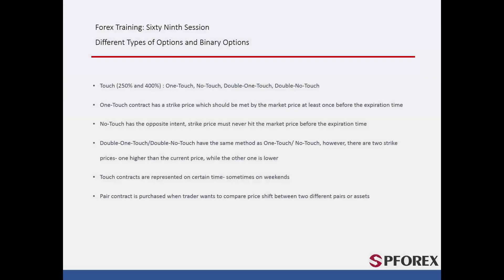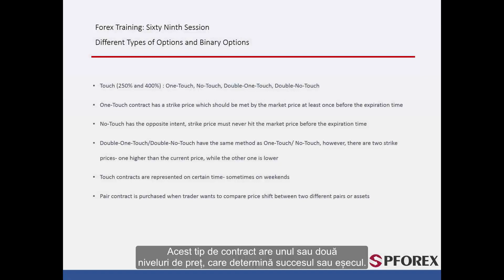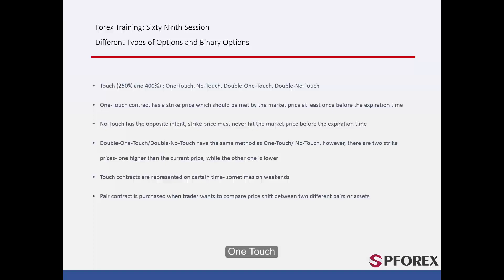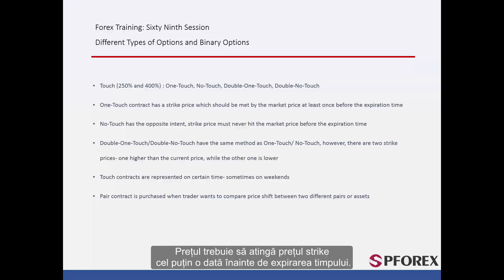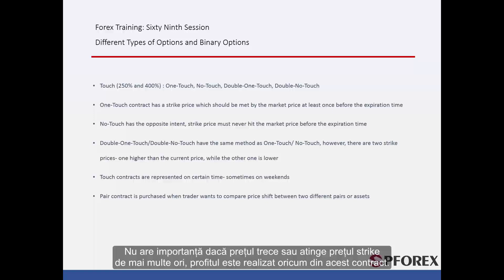Touch: This kind of contract has one or two price levels which determine the success or failure of a deal. One Touch: The price must at least reach the strike price before the expiration time. It does not matter if the price crosses or touches the strike price multiple times — the profit is achieved from this contract.